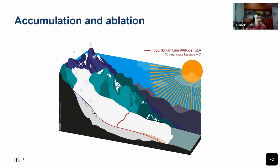We can divide a glacier into two zones. The upper zone is the accumulation zone — where snow that falls during winter stays over the summer, and the glacier grows. The lower zone is the ablation zone — where winter snowfall melts out fully in the summer, and ice also melts away. The line between these zones is called the equilibrium line altitude. If it is very low, the glacier is in good shape and gaining mass. If it goes up, the glacier is melting faster and faster.